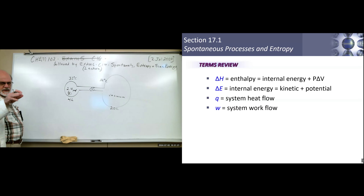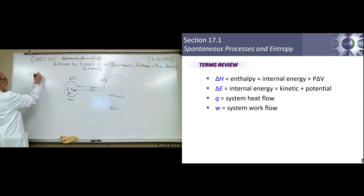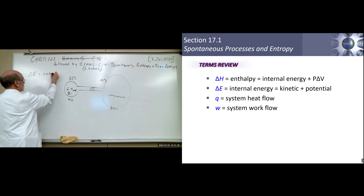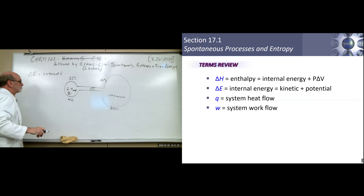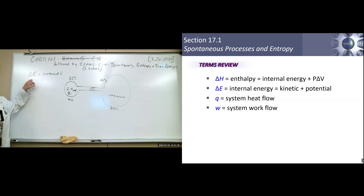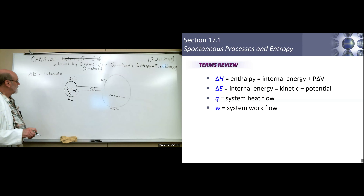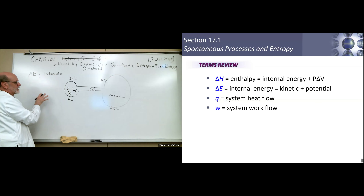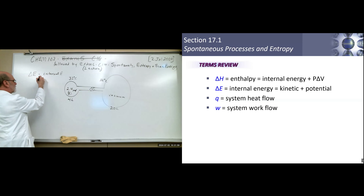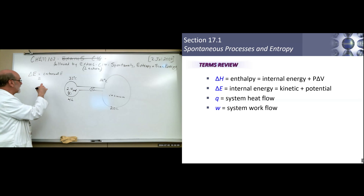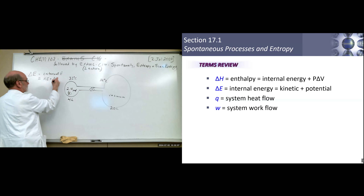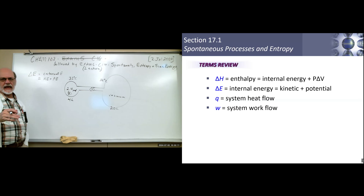Let's start with delta E — internal energy. Sometimes in textbooks you'll see this as U rather than E; I think they choose U because E is often used for something else. We're going to say delta E is internal energy, and this is the sum total of all the energy in the system in terms of kinetic energy and potential energy — all the energy that we can account for.